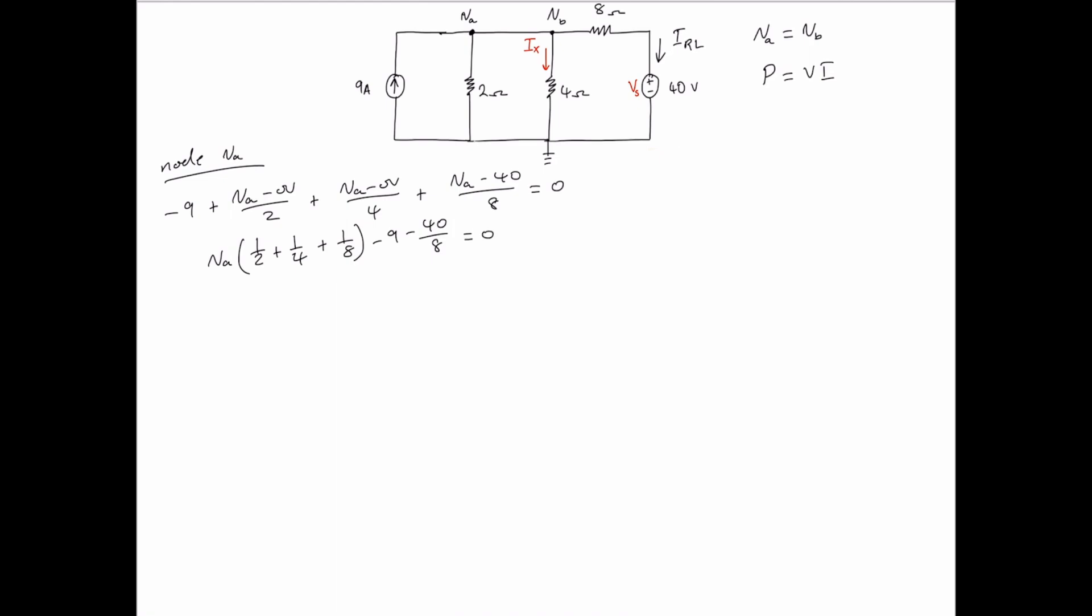Simplifying that, we get VA with a coefficient of 7/8 equals 14, so VA is then equal to 16 volts.